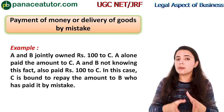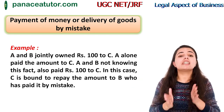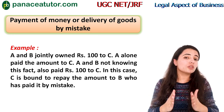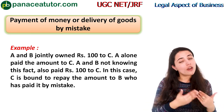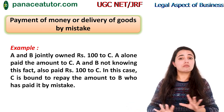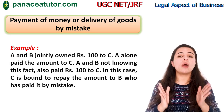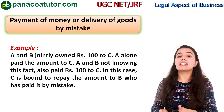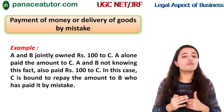That means B gave C Rs. 100 by mistake, since B did not know A had already paid. So C has a duty to return Rs. 100 to B. There was no intention of the parties to enter into a contract, but the law created an obligation — C must return the money to B. This is a quasi-contract.